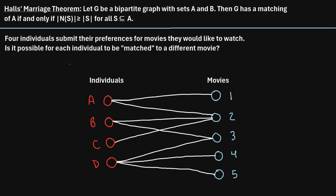Let's consider the following scenario. Four individuals submit their preferences for movies they would like to watch. Is it possible for each individual to be matched to a different movie? We have four individuals — let's call them A, B, C, and D — and there are five different movies that they can submit their preferences on for what they would like to watch.